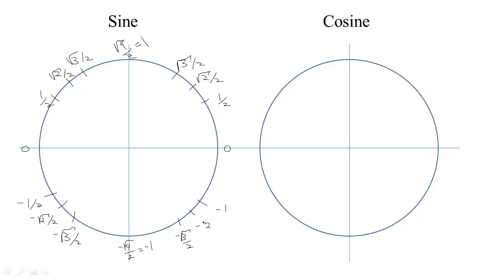Then we get negative √3/2, negative √2/2, negative √1/2. That would just be negative 1/2. So we have a quick way of memorizing these.